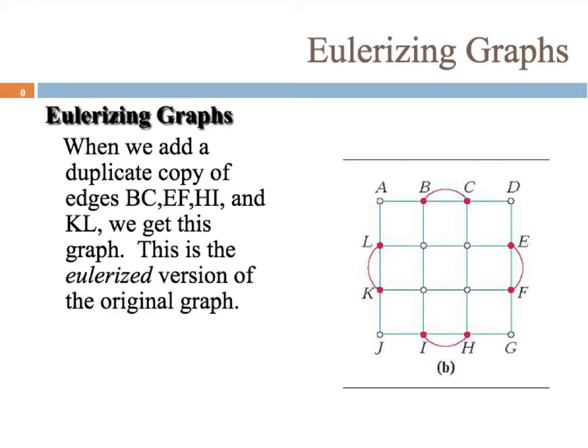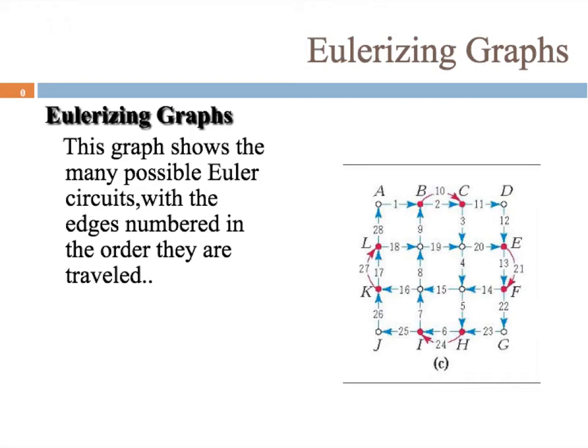Now we're going to be able to recross those edges — or rather, we're taking that extra edge as a step to get back to where we need to go. This graph shows a possible Euler circuit with the edges numbered. There's probably more than one way to do this; this is just one way with all the steps listed. You can see how those extra edges really help us out in the end.